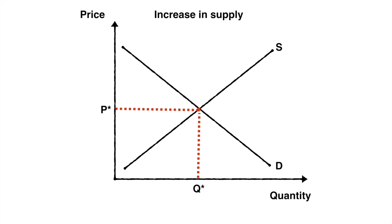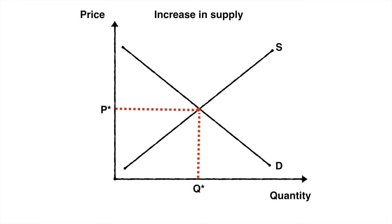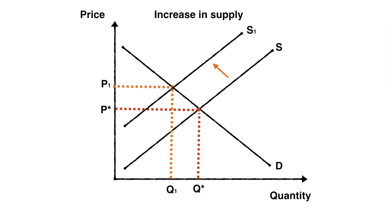For supply, we now examine a change in consumer surplus as a result of a decrease in supply. From the initial position, we see our consumer surplus as indicated at the start of the video. Once supply decreases from S to S1, potentially as a result of an increase in taxes, the equilibrium price rises to P1 and equilibrium quantity falls to Q1. We adopt the same approach in considering our new consumer surplus, using the new price as our lower border and the existing demand curve as our upper border. This area represents our new consumer surplus.